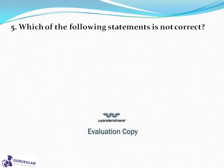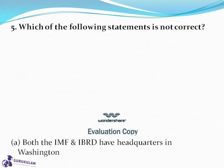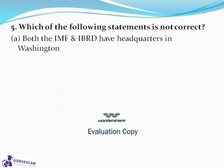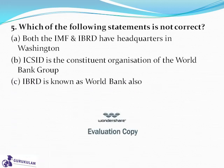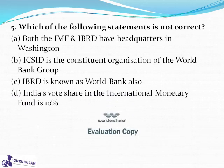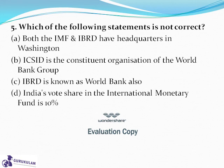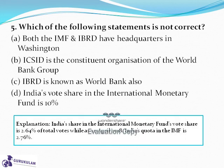Question 5: Which statement is not correct? Both IMF and IBRD have headquarters in Washington; ICSID is a constituent organization of the World Bank Group; IBRD is also known as World Bank; or India's vote share in the IMF is 10%. The answer is D — India's share in IMF vote is 2.64%, not 10%. As of April 2018, India's quota in IMF is 2.76%.